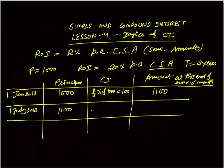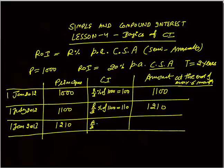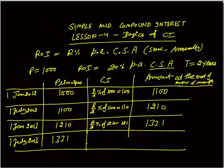Again, compound interest is R by 2% of the new principal 1100, which gives Rs. 110, so the amount becomes Rs. 1210. On 1st January 2013, 1210 is the principal; compound interest is 10% of 1210, which is Rs. 121, giving Rs. 1331. On 1st July 2013, R by 2% of 1331 is Rs. 133.1, giving a final amount of Rs. 1464.1 at the end of 2 years.